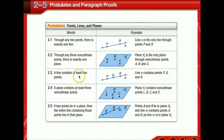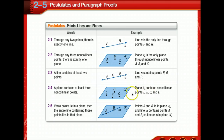A line contains at least two points, so it takes a minimum of two points to name a line. Line N contains points P, Q, and R. A plane contains at least three non-collinear points. Here we have a picture of a plane — plane K contains non-collinear points L, B, C, and E. Finally, if two points lie in a plane, then the entire line containing those points lies in the plane. Points A and B lie in plane K, and line M contains points A and B, so line M is in plane K.